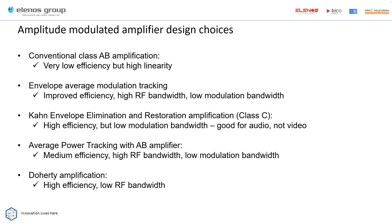A technology called envelope average modulation tracking was developed in the early 2000s, obviously aimed at improving efficiency. It has a very high RF bandwidth — in other words, it's not frequency dependent — but it has low modulation bandwidth, meaning it's very sensitive to high-frequency changes in the modulation characteristics.